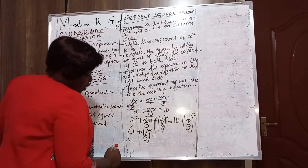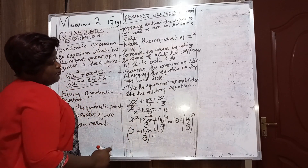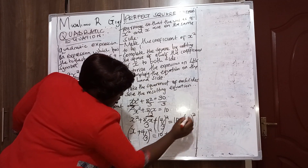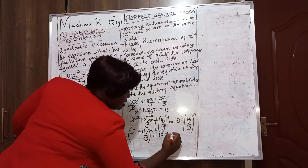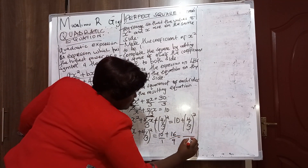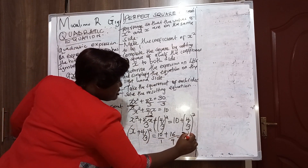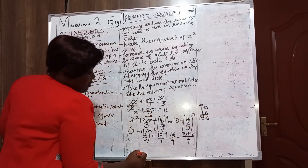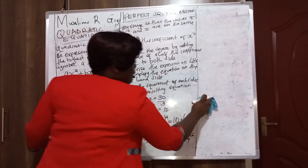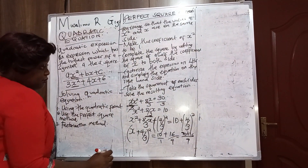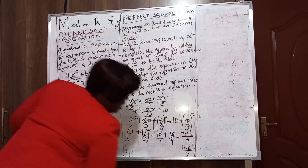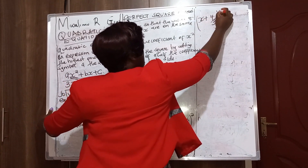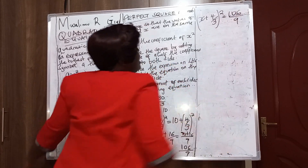So (x + 4/3)² = 10 + (4/3)². Now 4² = 16, and 4/3 squared is 16/9. So 10 + 16/9 = 90/9 + 16/9 = 106/9. Therefore (x + 4/3)² = 106/9.